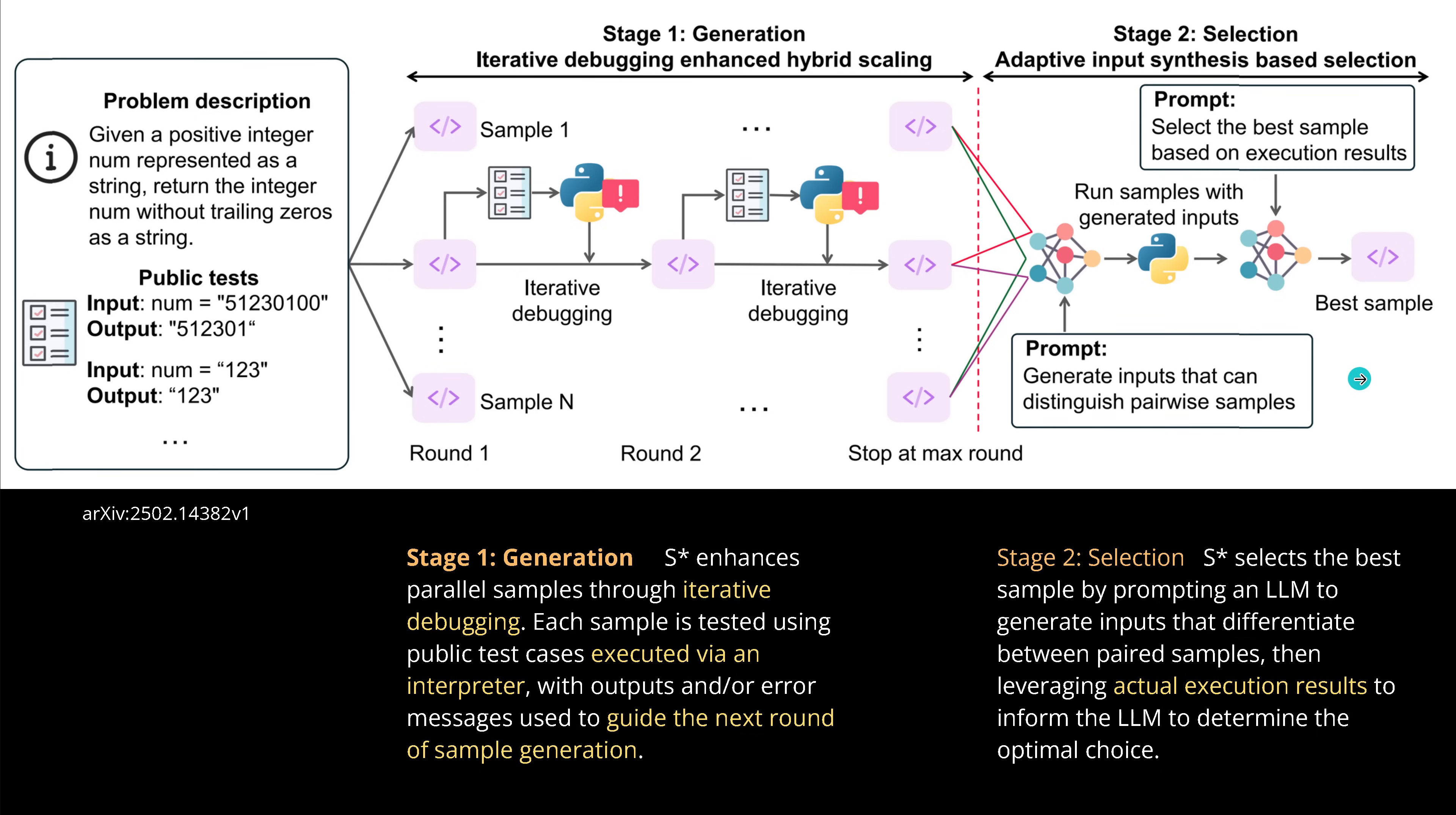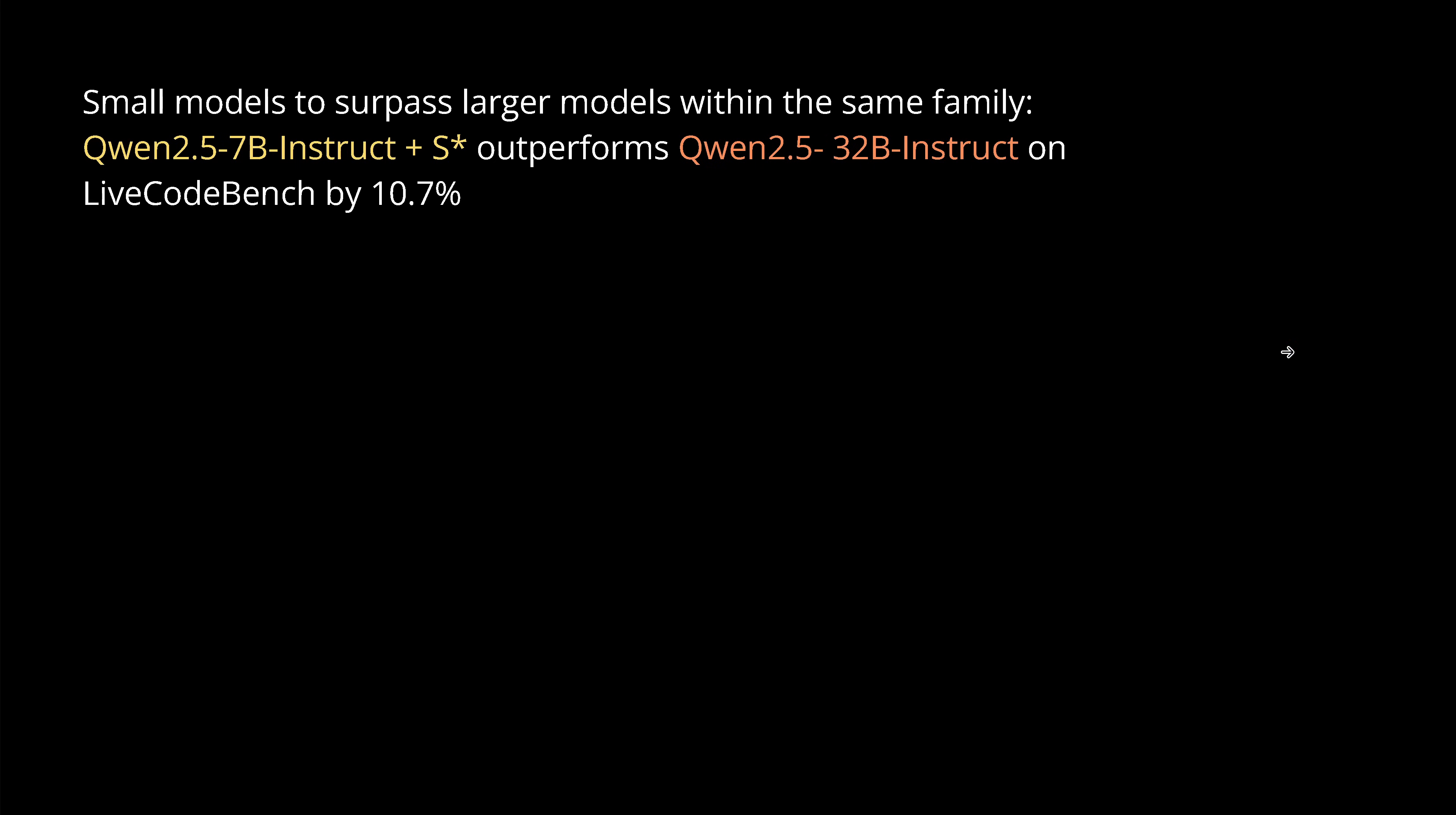I give you the complete code in a minute. It's ready for you, you can do it immediately. Let's talk about the facts. You have a Qwen 2.5 7B Instruct plus this new S-Star code. This 7B now outperforms a 32B instruct model on Live Code Bench by quite an interesting amount.